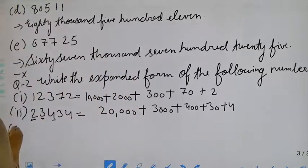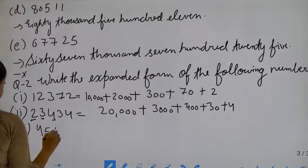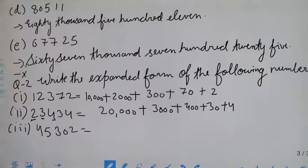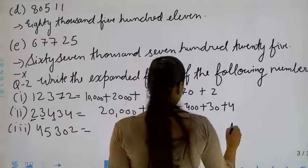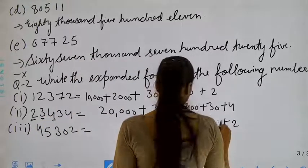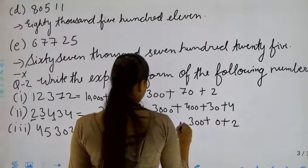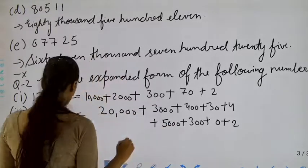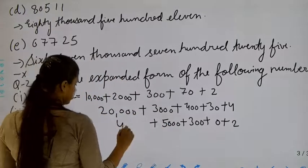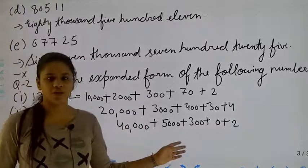Now move to the next part, that is the third part: forty-five thousand, three hundred two. Again, we have to start from the right-hand side — ones, tens, hundreds, then thousands, and then ten thousands. It will be forty-five thousand, three hundred two.